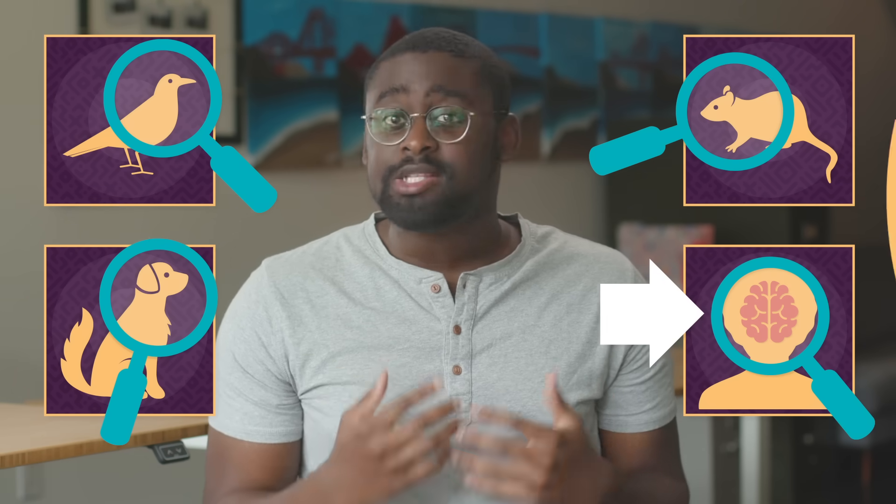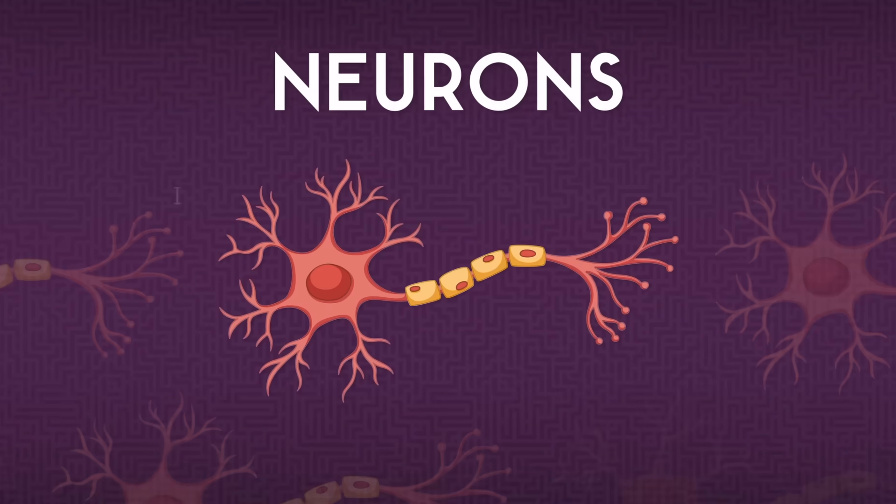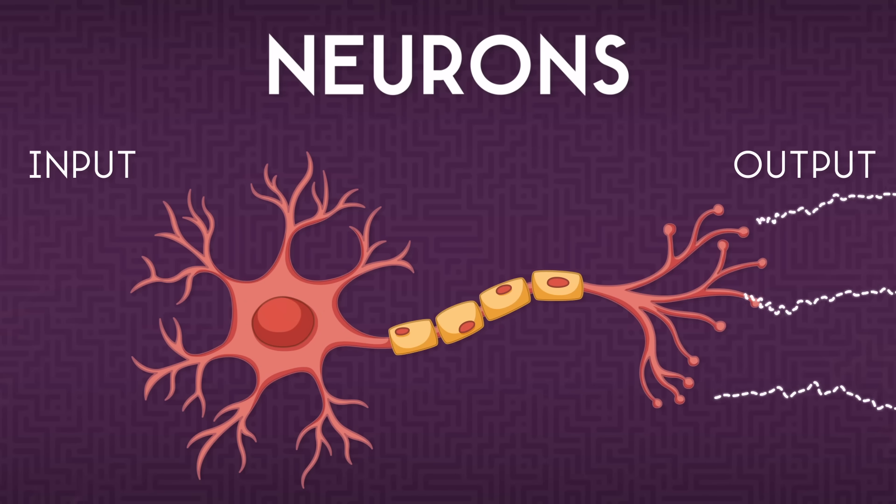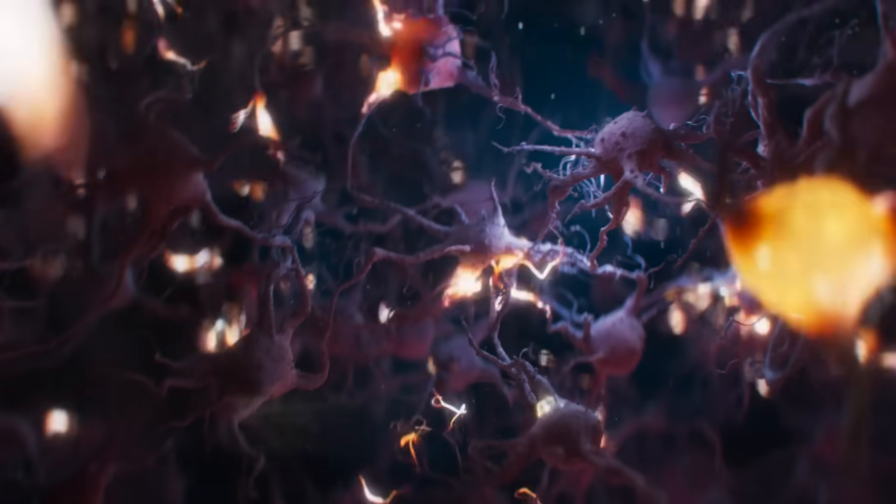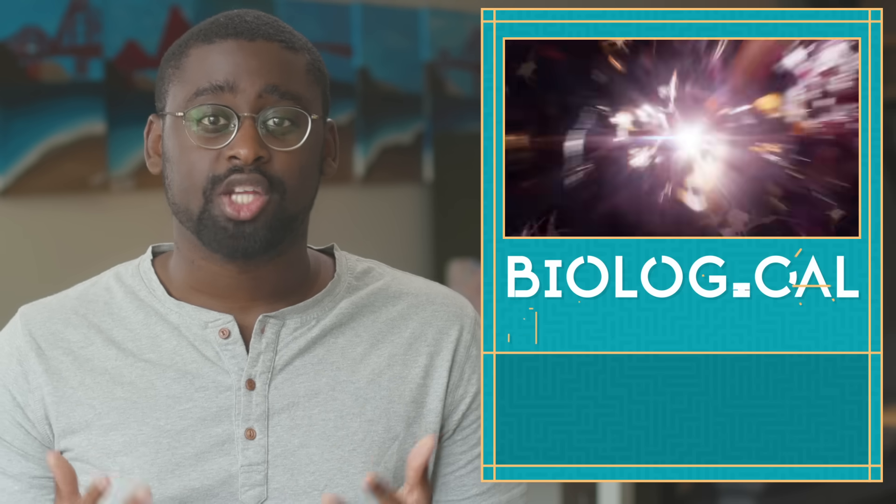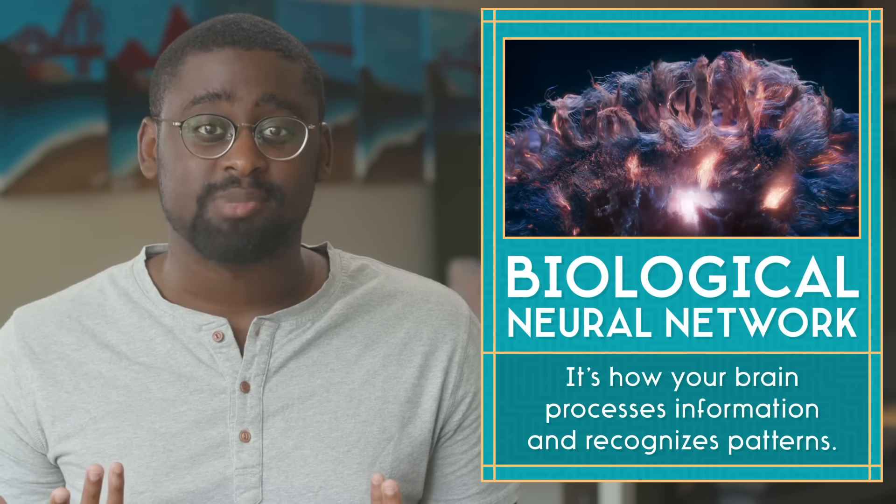To make a learning machine, early computer scientists looked for clues by studying other things that are good at learning. And it turns out that nothing is better at learning than the human brain. Our brains are made up of special cells called neurons. A neuron has two ends. Input signals enter in on one end, they're combined together inside the neuron, and leave the other end as a single output. All of the billions of neurons in your brain are connected to each other in what's called a biological neural network. It's how your brain processes information and recognizes patterns.